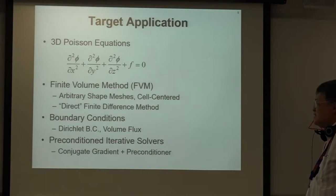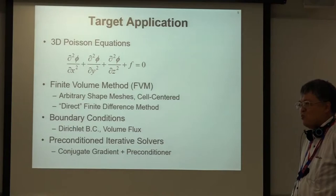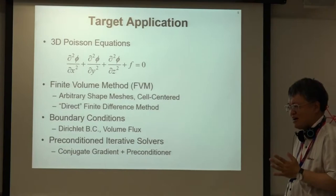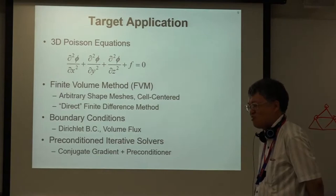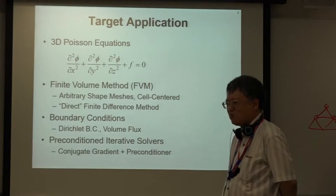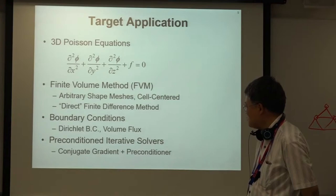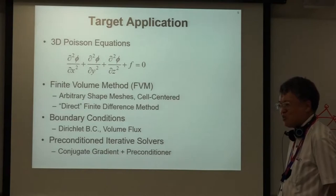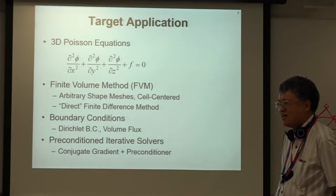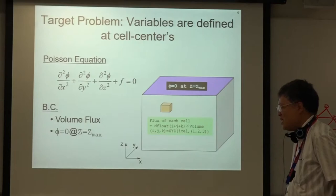The target application is a very simple 3D Poisson equation — a second-order partial differential equation. These equations appear in problems like steady-state heat conduction and steady-state solid mechanics. The finite volume method can handle arbitrary shape meshes; it is cell-centered and sometimes called the direct finite difference method. Boundary conditions are applied, and the resulting equations are solved by preconditioned iterative solvers — conjugate gradient with incomplete Cholesky (IC) factorization preconditioning.